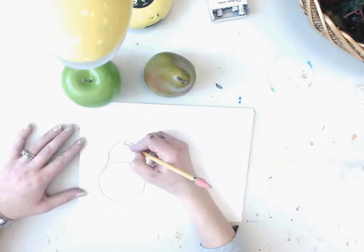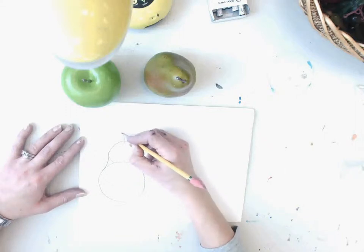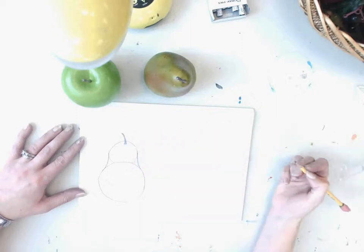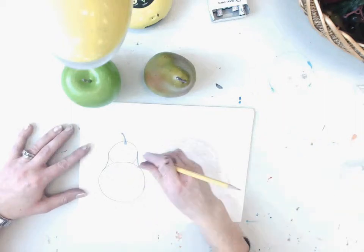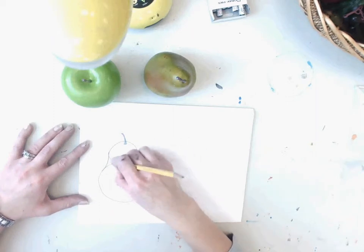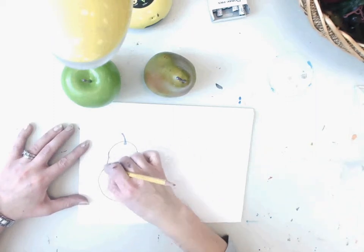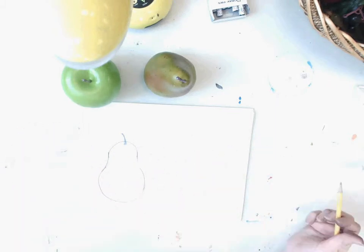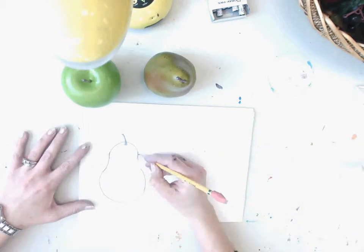A pear has a stem not directly on the top but just a little bit down and it usually goes out in a curve. I'm going to color in my stem. Because I don't need these center lines, I'm going to erase them. Now we have a pear.